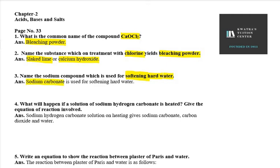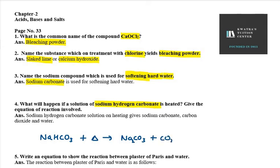Question number 4 is: what will happen if a solution of sodium hydrogen carbonate is heated? When we heat sodium hydrogen carbonate — that is NaHCO₃ — you will get sodium carbonate, carbon dioxide, and water (H₂O). This is the equation involved here.